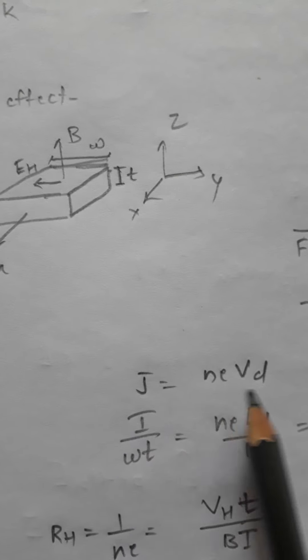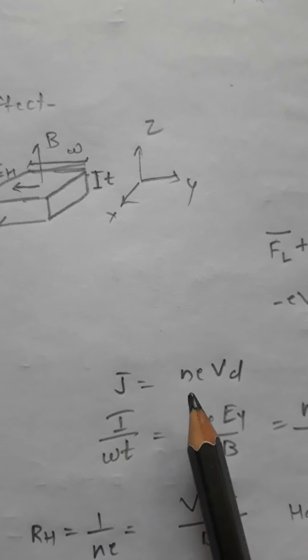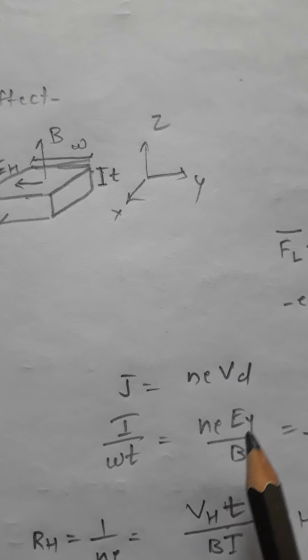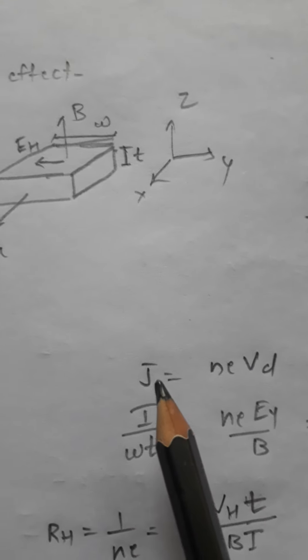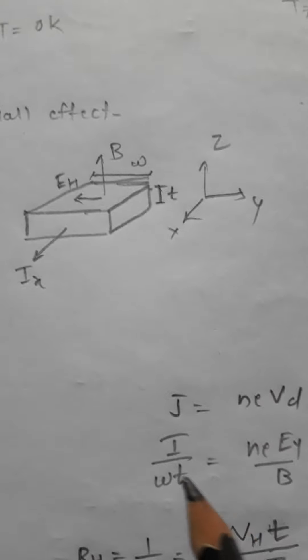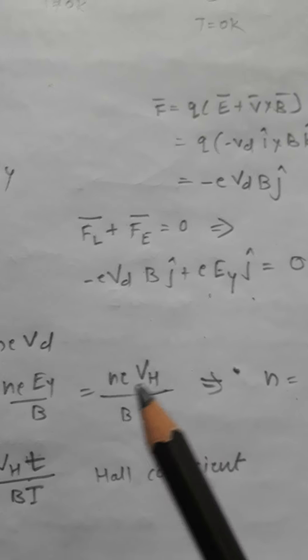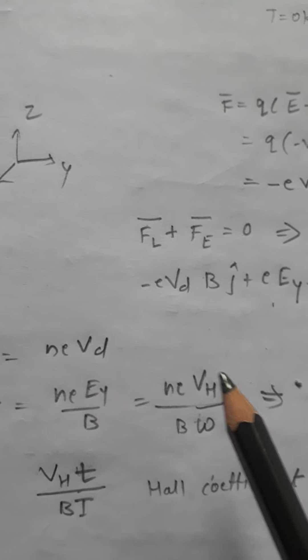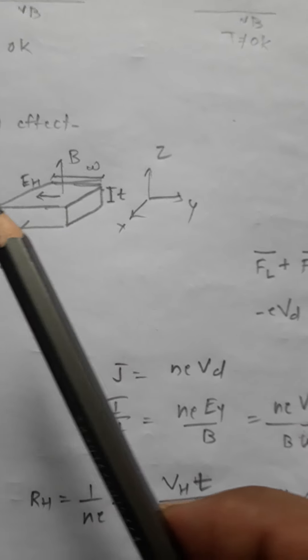This is how we define the current density J = nεvd. If we replace vd by Ey/B, and define current density as I/ωt (current divided by cross-section area wt), then we can write the Hall electric field as electric potential divided by width w.